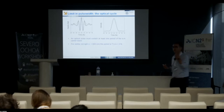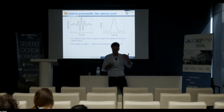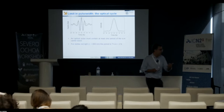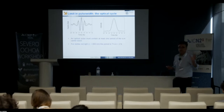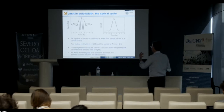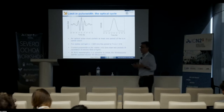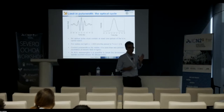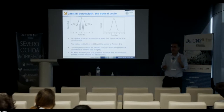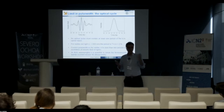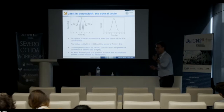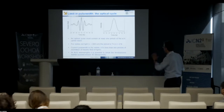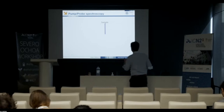Pulse durations have stagnated near the same values for about 30 years because of a fundamental limit: the optical cycle. For visible red light at 600 nm wavelength, the oscillation period is about 2 femtoseconds, so you cannot go below this optical cycle limit. If you go to the XUV or X-ray range, periods become much shorter, enabling attosecond pulses. The current record is ~50 attoseconds, though these are used to study electronic wave packets in atoms and molecules, not vibrational dynamics.